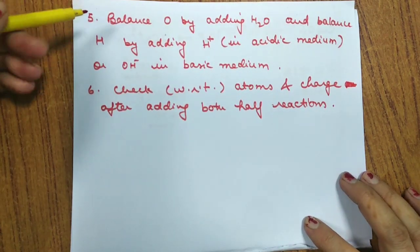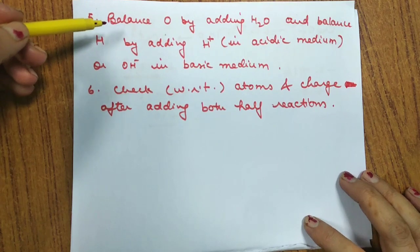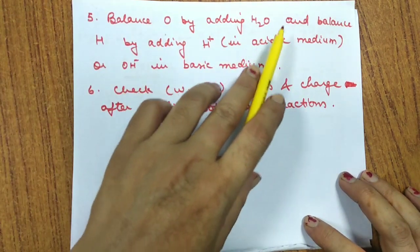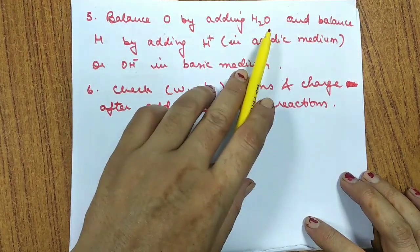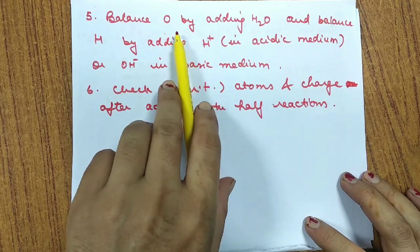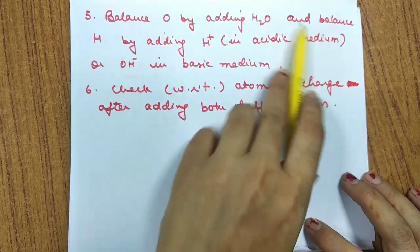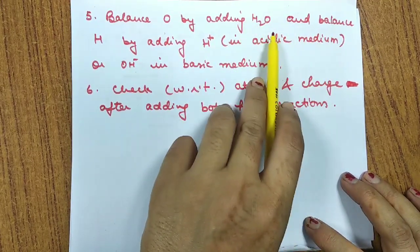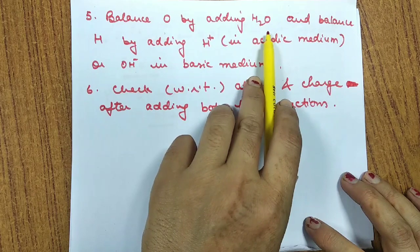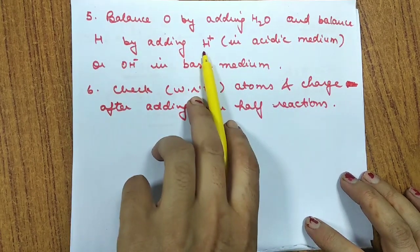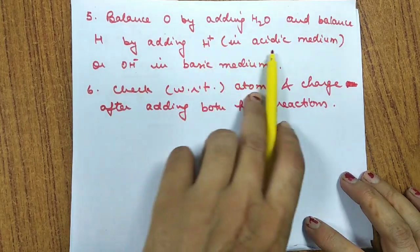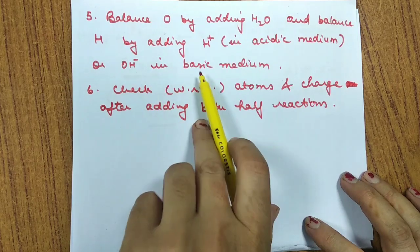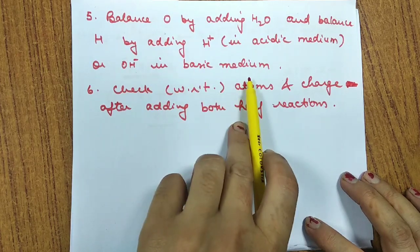After adding electrons to balance the charge, the next step is to balance oxygen by adding water molecules to the deficient side. After balancing oxygen, we balance hydrogen by adding H⁺ ions in acidic medium or OH⁻ ions in basic medium.